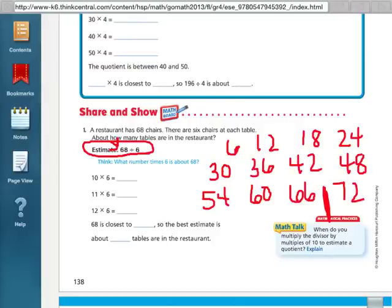But 68 is closer to 66 than it is 72. So my answer will be that I counted by 6's or use my multiples of 6, 1, 2, 3, 4, 5, 6, 7, 8, 9, 10, 11 times. So my answer, my estimate will be it's about 11. There are about 11 tables in the restaurant.